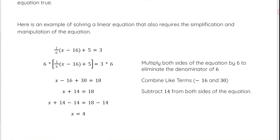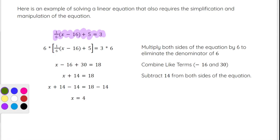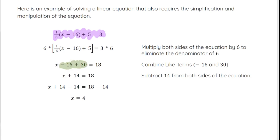Here is an example that we will eventually be able to do — solving a linear equation that requires simplification and manipulation. They start with this equation and, briefly, they multiply both sides by 6. That eliminates the 1/6 and gives us the equation x minus 16 plus 30 equals 18. They combine like terms, then subtract 14 from both sides, ending up with the solution x equals 4.